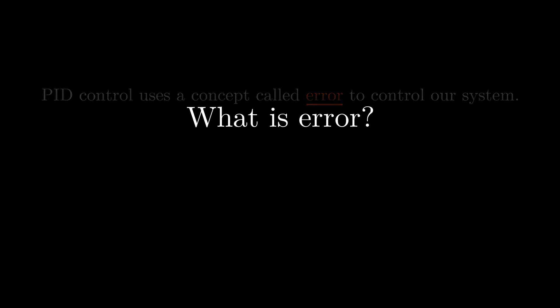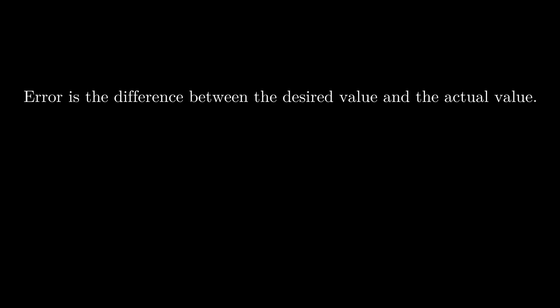Error is a term that describes how close our system is to its desired state. We calculate error by subtracting the measured state from our desired state.